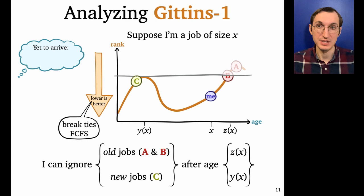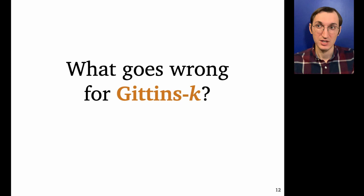Cool. So these two numbers, the old job and new job age cutoffs, these are the most important quantities for figuring out mean response time. So now we're going to see how these quantities differ for Gittins-k.